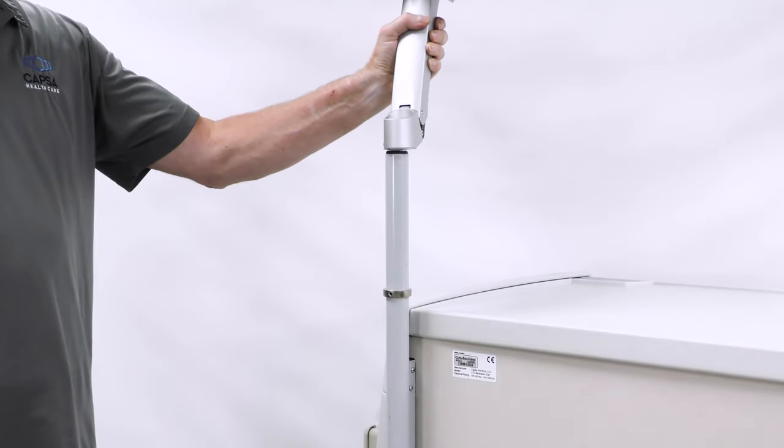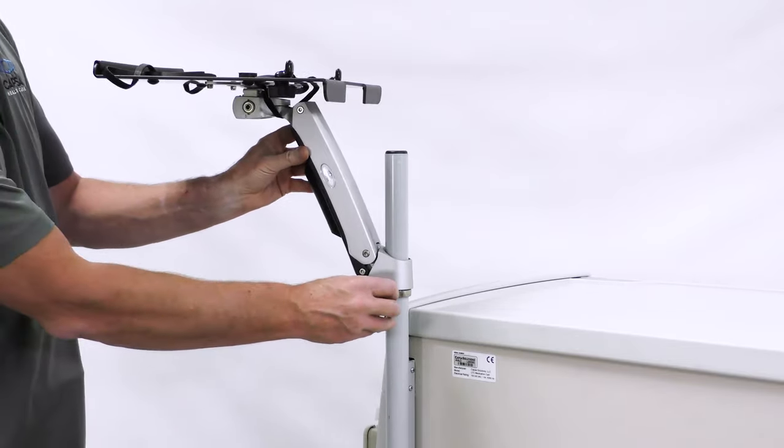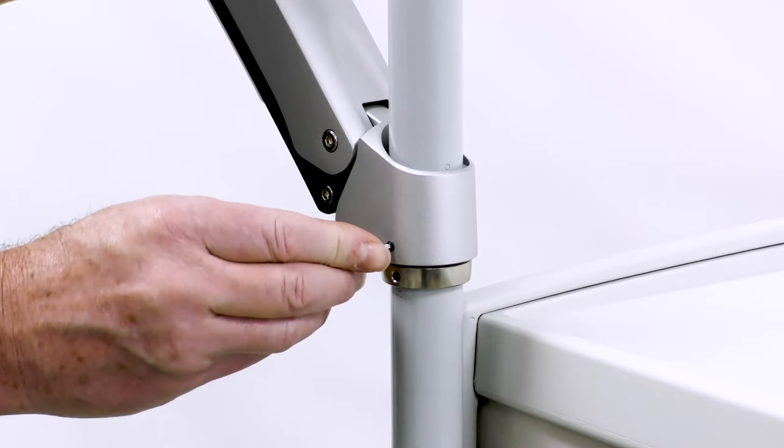Slide the AX arm onto the post to the silver base collar. Use the supplied allen wrench to snug the tension screw.